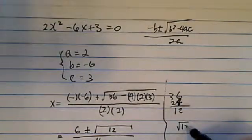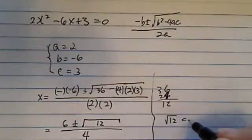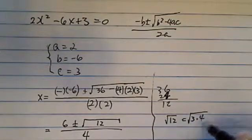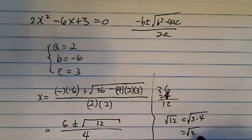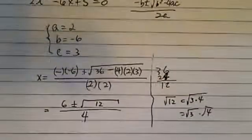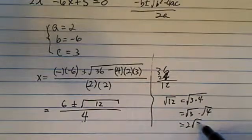And the radical of 12 is equal to the radical of 3 times 4, and 4 is a perfect square, so we can actually reduce it into 2 radical 3.